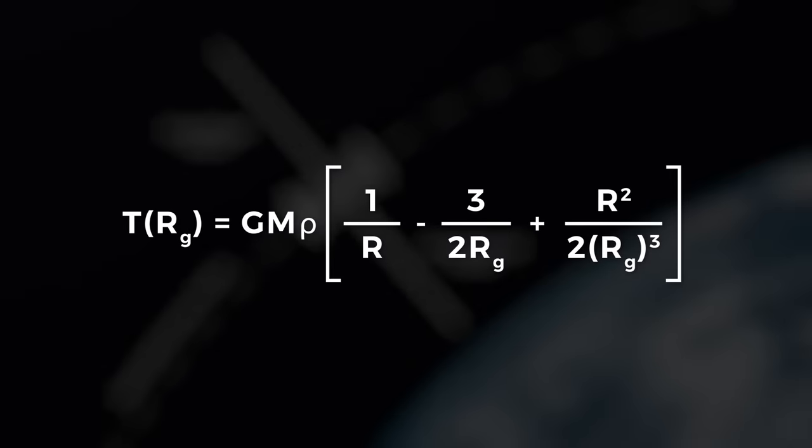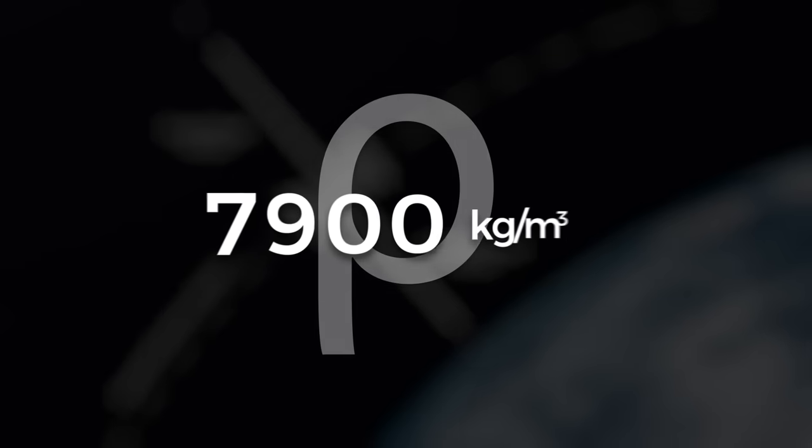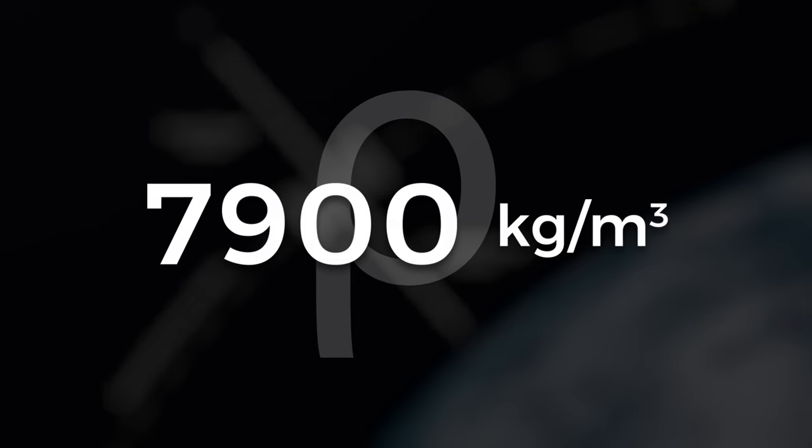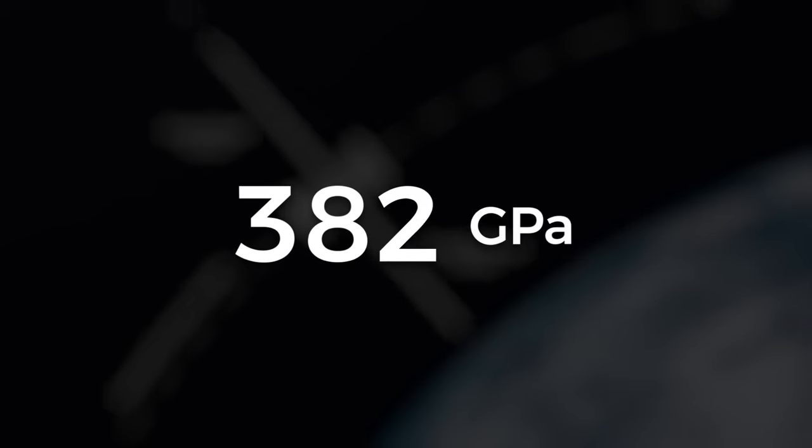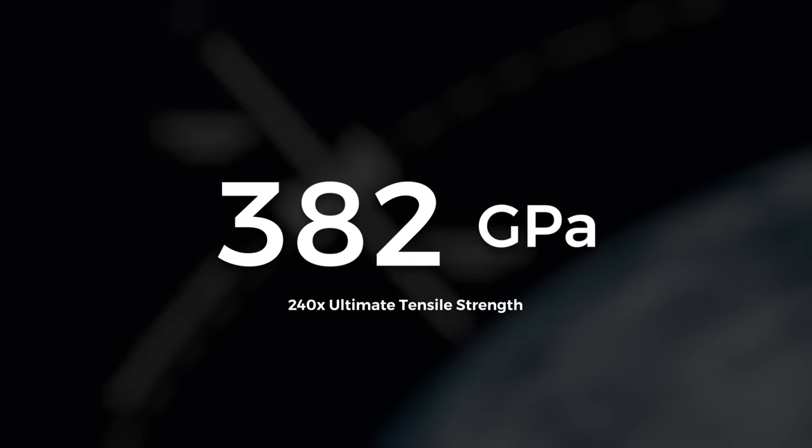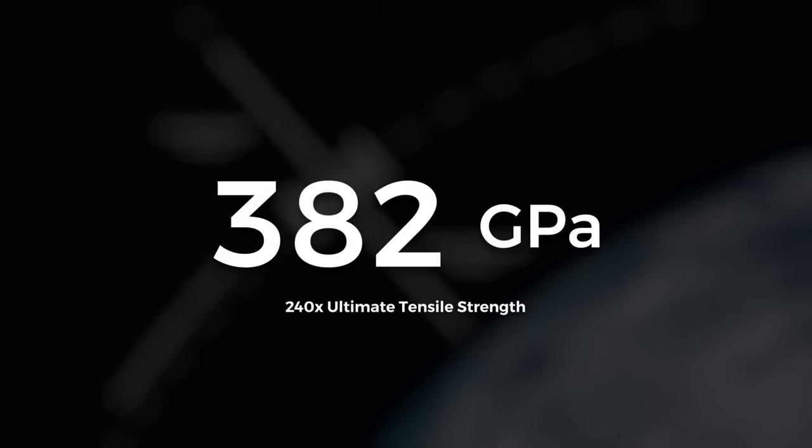All of these numbers are fixed bar one, the density of the material we choose. If we choose to build this cable out of steel with a density of 7900 kilograms per meter cubed, our maximum tensile stress would be 382 gigapascals. That's 240 times the ultimate tensile strength of steel. In other words, steel can't do the job.